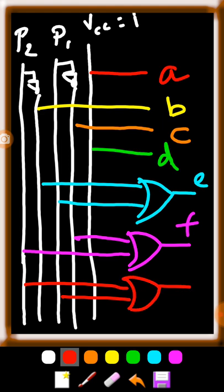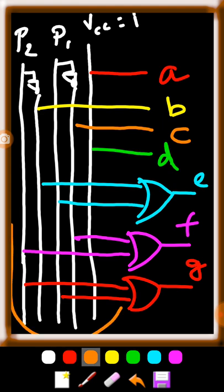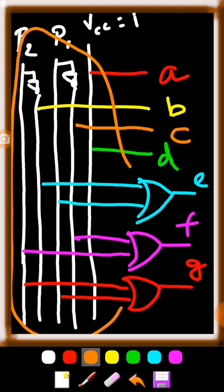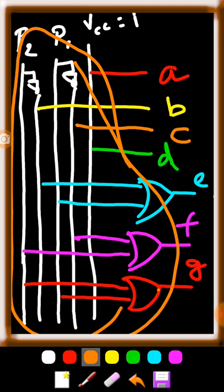For G, the expression is P1 plus P2, so an OR gate is used. This is the required circuit for the vending machine display. This circuit will give the expected output. Hope you can understand these things.